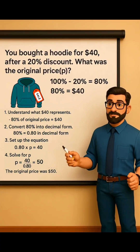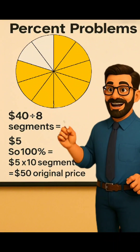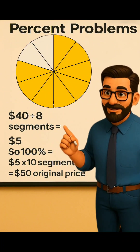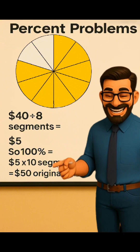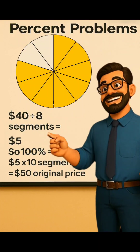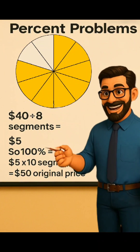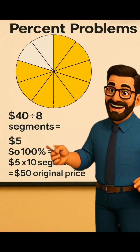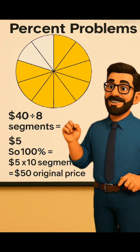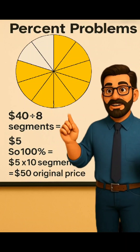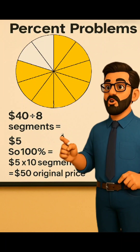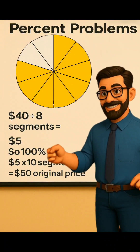For method 2, let's break down this percent problem like a pie chart. You paid $40 for the hoodie, but it was after a 20% discount. So if the pie had 10 segments to represent 100%, that means 8 segments represent the 80% of the original price you actually paid. Divide $40 by 8 segments to get $5 per segment. So if each segment is $5, then 5 times 10 equals $50 for the total original price before the discount.